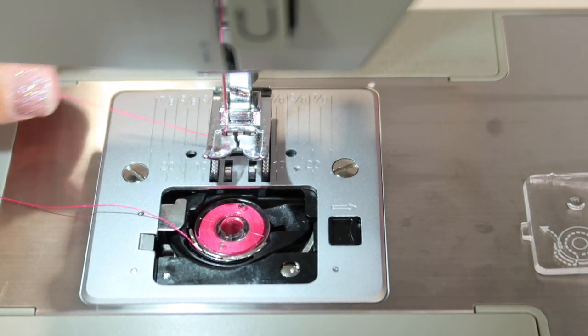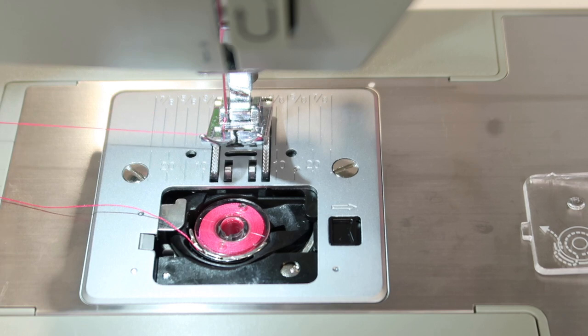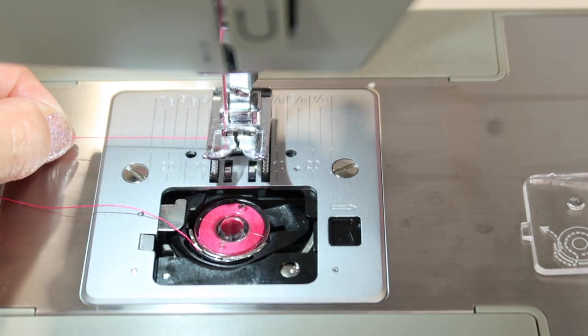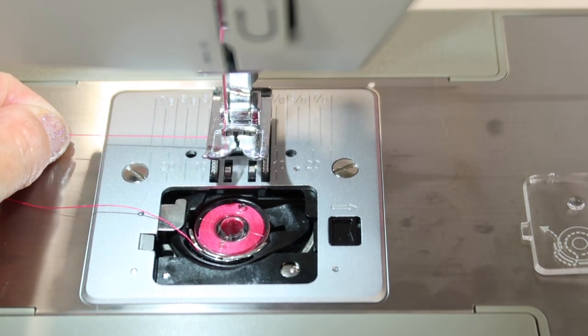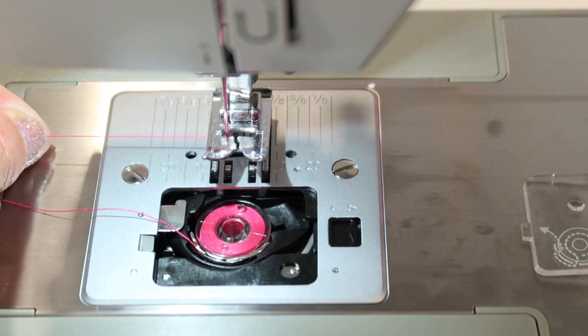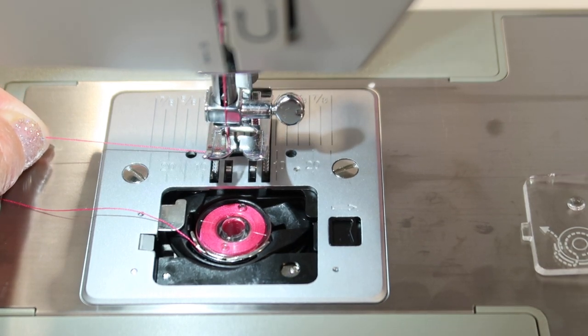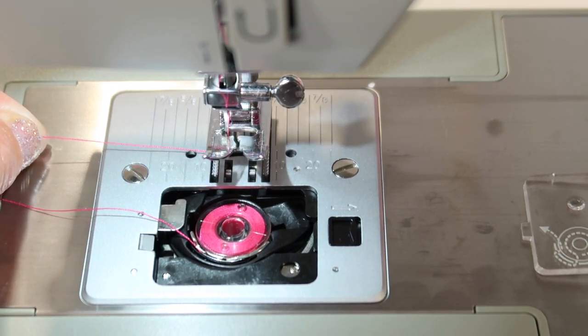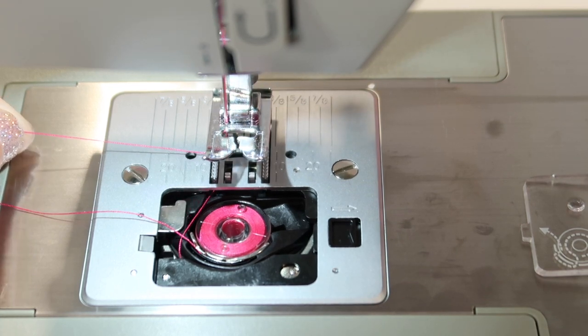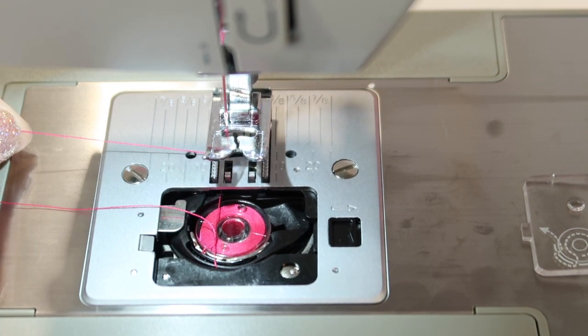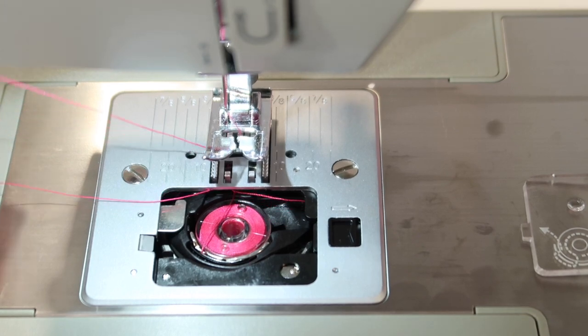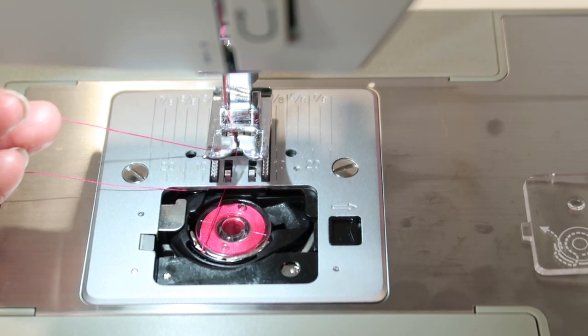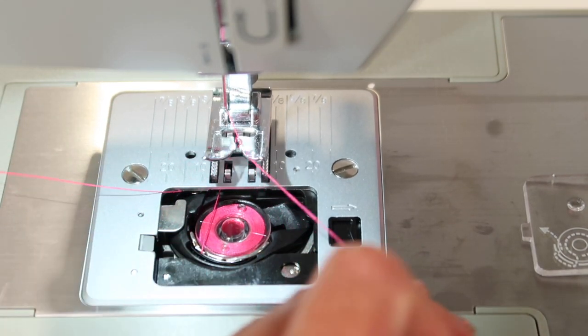Next, hold on to the thread that you have coming out of your needle. Hold on to it with your left hand, and with your right hand, we're turning the hand wheel and taking one full stitch. If you actually watch here as I bring this up, the thread actually comes around, hooks that bobbin thread, keep pulling on here.